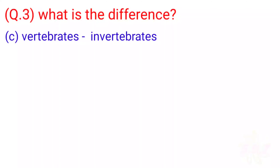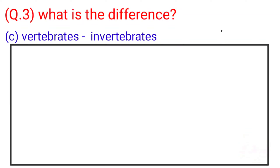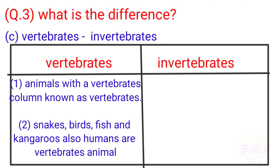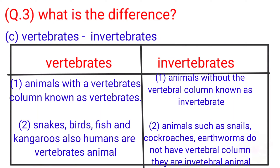C: Vertebrates vs. Invertebrates. Vertebrates: 1. Animals with a vertebral column are known as vertebrates. 2. Snakes, birds, fish, kangaroos, and humans are vertebrate animals. Invertebrates: 1. Animals without a vertebral column are known as invertebrates. 2. Animals such as snails and cockroaches do not have a vertebral column — they are invertebrate animals.